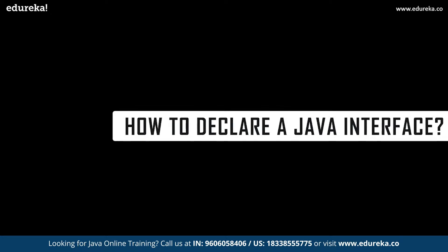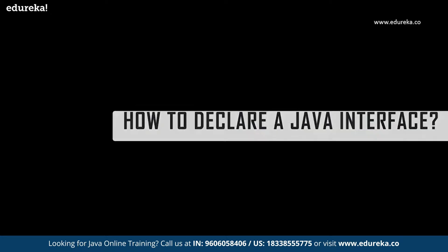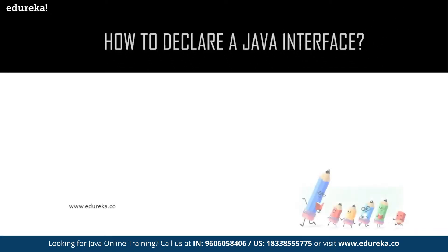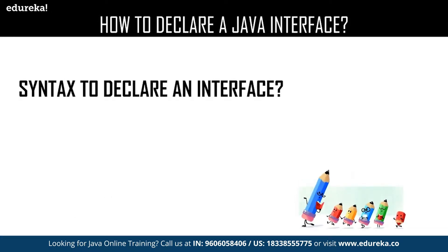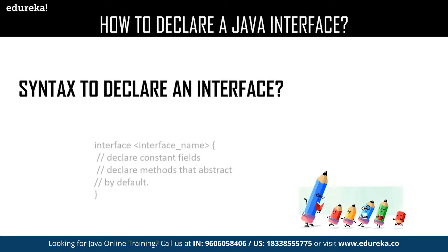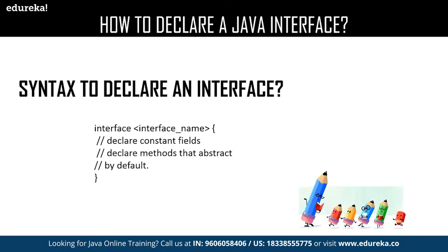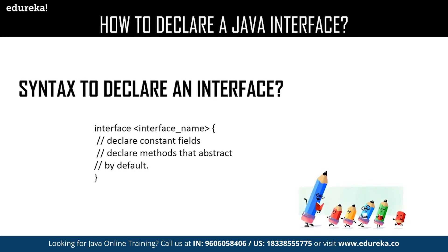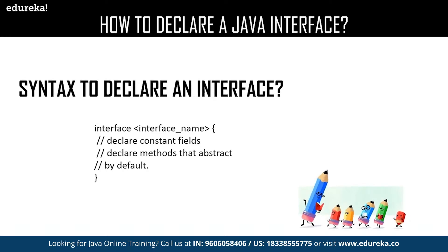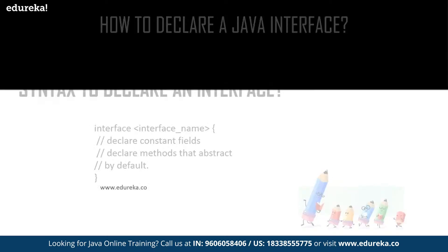Now let us have a quick revision about how to declare an interface. This is the syntax for declaring an interface: you use the interface keyword followed by the name of your interface, and inside the interface you can declare your methods. By default, all methods declared in an interface are considered to be public.